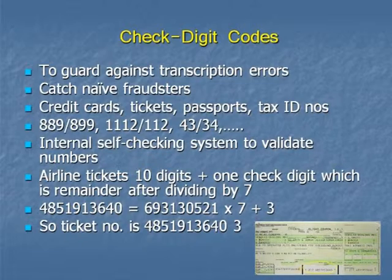So if somebody were to write this down incorrectly and flip the 3 and the 1 around, when it was divided by 7, the remainder would not be equal to the check digit — in this case 3 — and the number would be invalid. So there's a simple internal consistency check that this is a valid ticket number. This type of structure is developed in all sorts of different ways for different devices to guard against typical transcription errors.